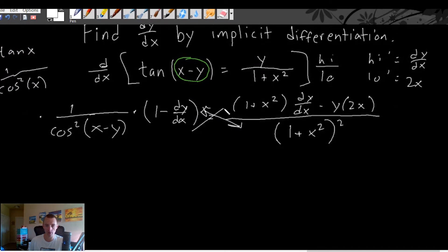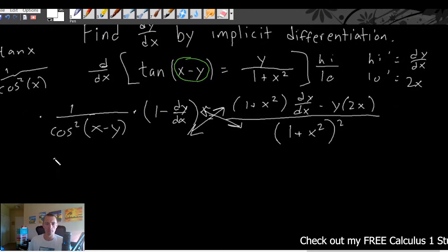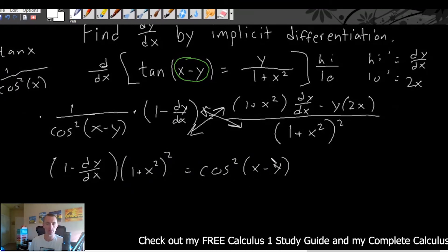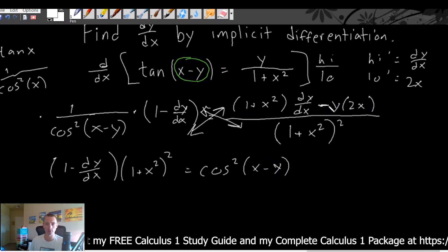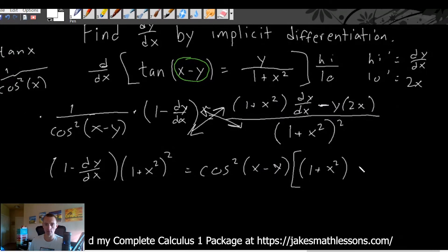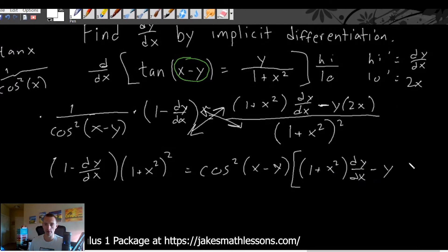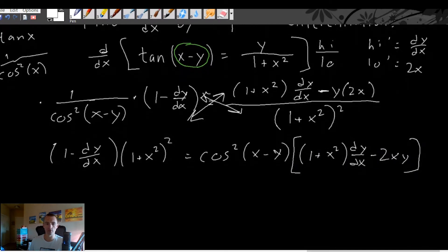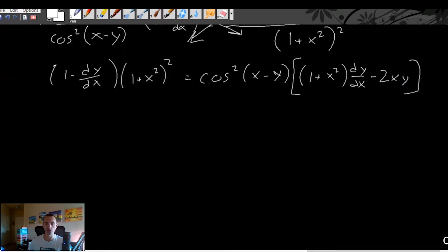Another way to think of it is cross-multiplying — multiply our denominators across and our numerators across. So we get the denominator here times the numerator here, and the denominator here times the numerator here, which is 1 minus dy/dx. When we're multiplying cosine squared of x minus y times the whole numerator, notice we have addition and subtraction within that numerator — make sure you put the whole numerator in parentheses, that's very important, or else you're not going to properly distribute.